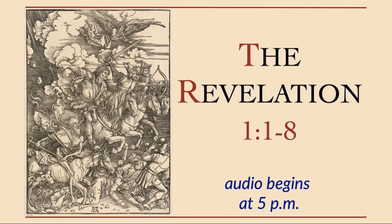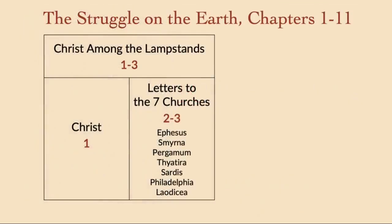Let's go ahead and pull up the first chart we've got tonight. Remember that last class we talked about the overall structure of the book of Revelation — that the book divides very neatly into two parts: chapters 1 through 11, and chapters 12 through 22. Both parts tell the same story, just from a different perspective. This evening we're starting at the very beginning, chapters 1 through 11, the struggle on the earth.